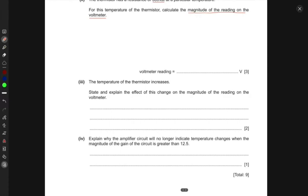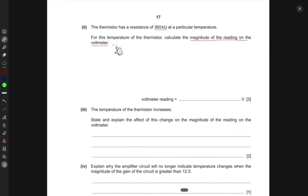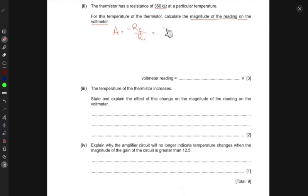We know that the gain A equals minus R_F over R_in, which is V_out over V_in. V_out is what we want to find - the reading on the voltmeter. V_in is what we just found at X, which was 0.40 volts.